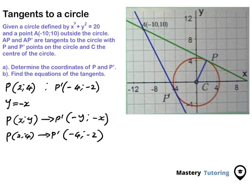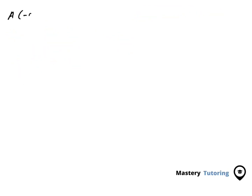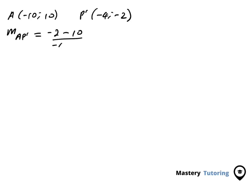Now we move to the equation of line AP'. We know the coordinates of A = (-10, 10) and P' = (-4, -2). The slope of AP' equals (-2 minus 10) over (-4 minus (-10)), which is -12 over 6. Therefore, the slope M of AP' equals -2.